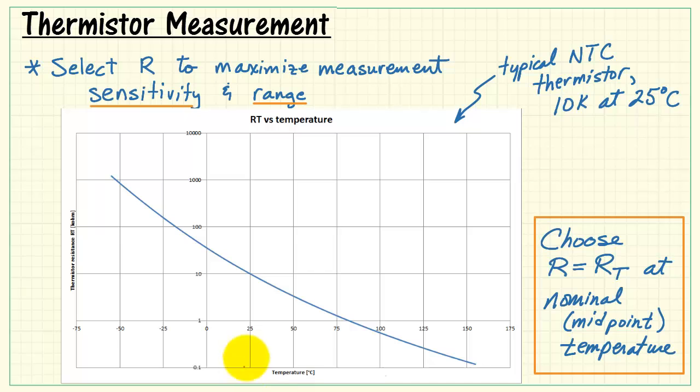Now supposing, in a different application, you're working on the inside of a freezer, for example. So we'd say, in this case, the nominal temperature is 0 degrees C. As we project up, we see that the thermistor has a resistance of approximately 40k.